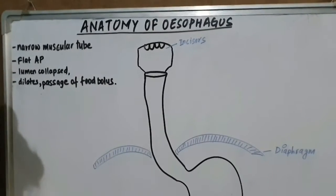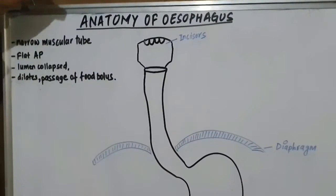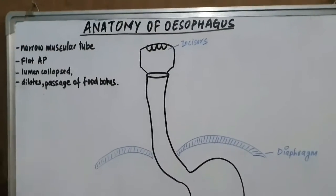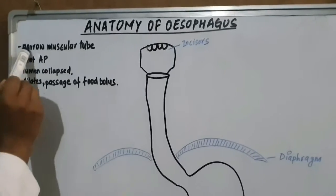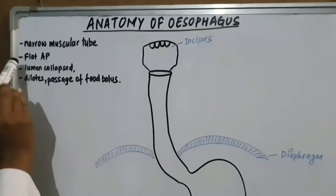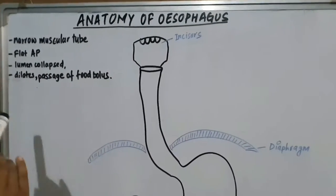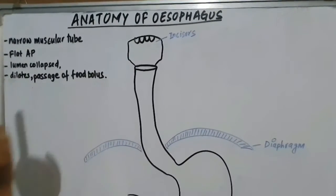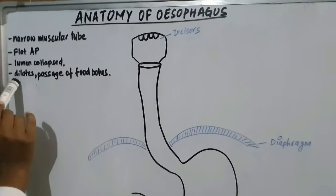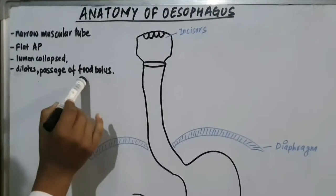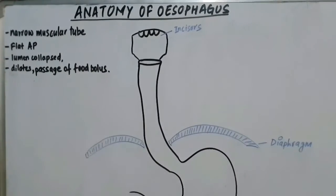Welcome friends to NetMedLife. Today I will be talking about the anatomy of the oesophagus. The oesophagus is a narrow muscular tube, flat anteroposteriorly. Normally the lumen is collapsed, and it dilates when a food bolus passes through it.